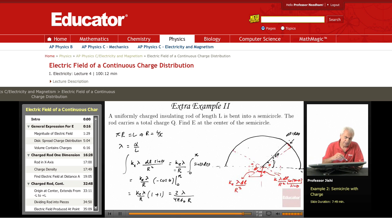Now we can replace lambda by q over l, and l of course is pi r. So lambda is q over pi r. You can replace lambda by q over pi r and you end up with some expression that depends on q and r.